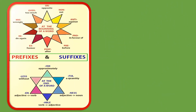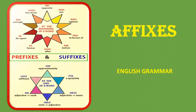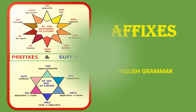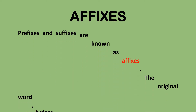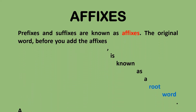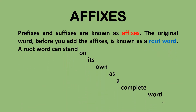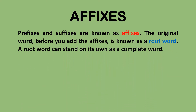We are going to learn about prefixes and suffixes, which are together called affixes. The original word before you add the affixes is known as a root word, and that root word is a complete word which can stand on its own.